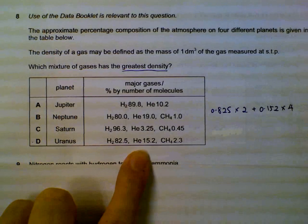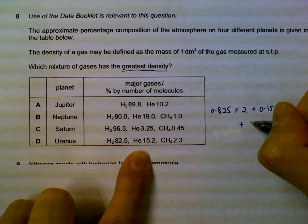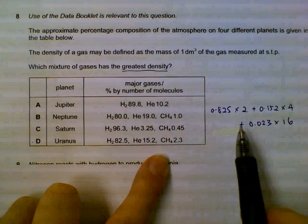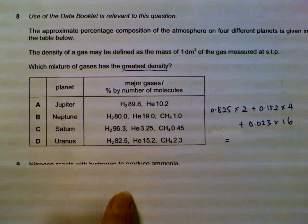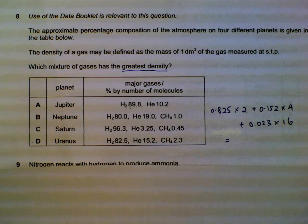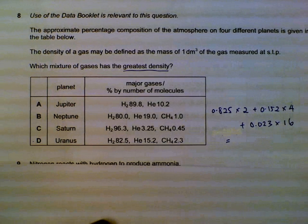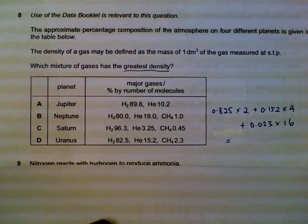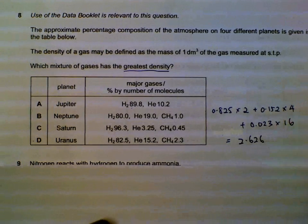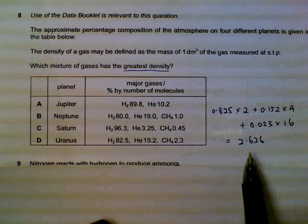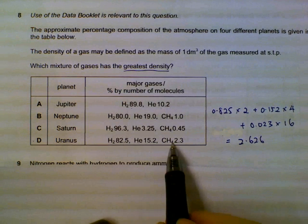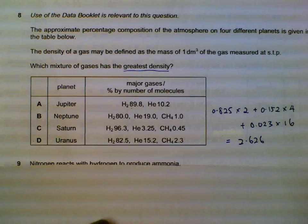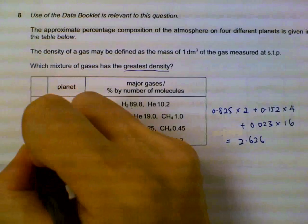And then methane, 0.023 multiplied by methane's MR, 16. So, all these percentages, and their weighted average, we can tally them up, we will get the average MR. So, the average MR is about 2.626 for the planet of Uranus. You do the same for the other options, and pick the one that has the highest number. That will be the one that has the greatest density. In this case, I'll just show you the example for D, which will turn out to be the highest number.